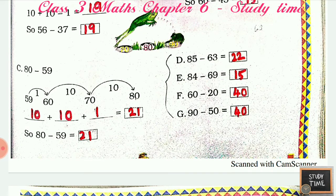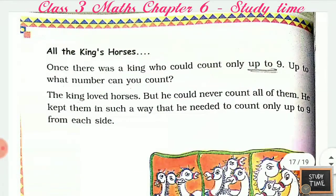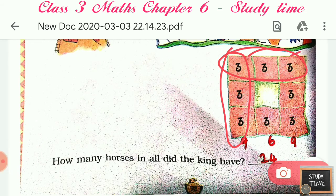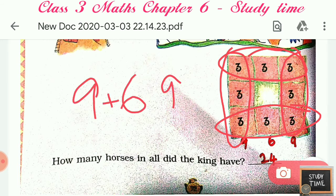Next story: All the King's Horses. Once there was a king who could count only up to nine. How far up can you count? This king could count only up to nine and knew nothing beyond nine. The king loved horses but could never count all of them. He kept them arranged so that he needed to count only up to nine from each side. All sides showed nine, so he had 9 plus 9 plus 6 — a total of 24 horses.